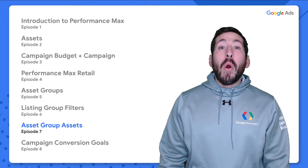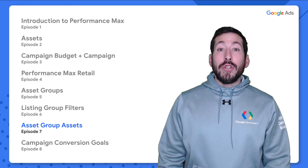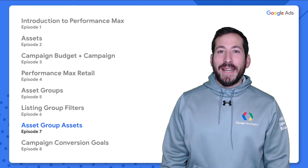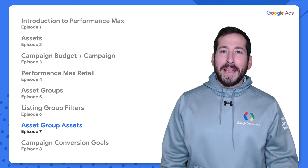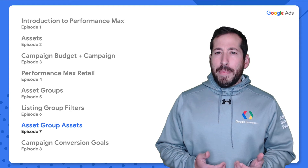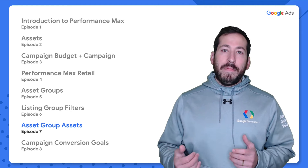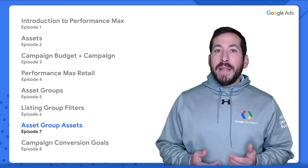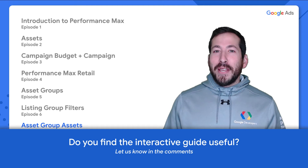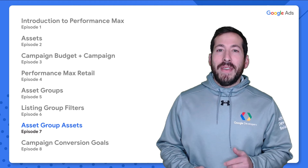What's up to all my Google Ads developers out there and welcome back to Performance Max for Developers. I'm Devin and this is episode 7: Asset Group Assets. Hit that thumbs up button if you're enjoying the video and subscribe to our channel to stay up to date with all of the latest content. We've been receiving a lot of great comments — that helps us know what content to make and can even influence the API itself. We'd love your thoughts on whether the interactive guide has been a useful visual aid. Please drop a comment below. With that, let's dive in to asset group assets.